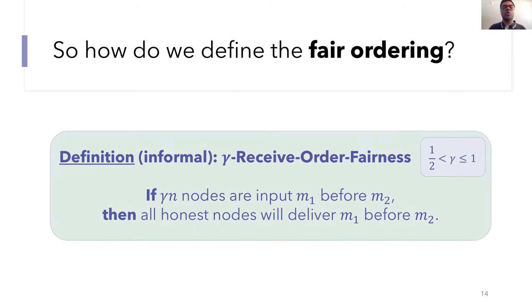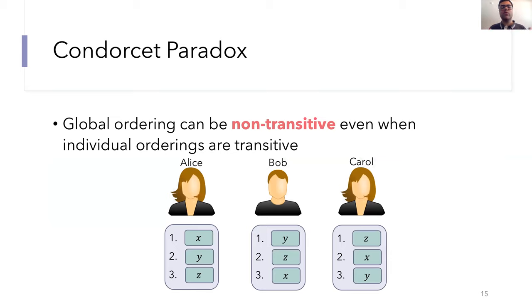Okay, so having set up the groundwork for our model, we can now start to think of how best to define this order fairness. Here's a natural definition, which we call receive order fairness. For an order fairness parameter gamma, which is at least half and at most one, gamma order fairness is defined as follows. If gamma times n nodes are input M1 before M2, then all of the honest nodes should deliver M1 before M2. This is very similar to the definition I mentioned when comparing it to BA validity, but here we now add an extra order fairness parameter.